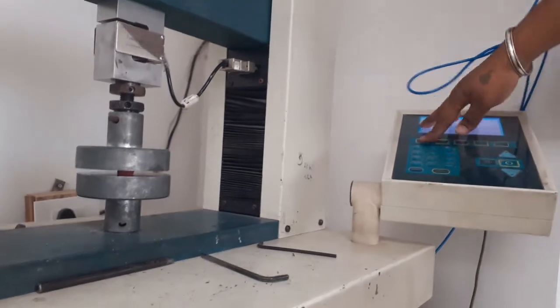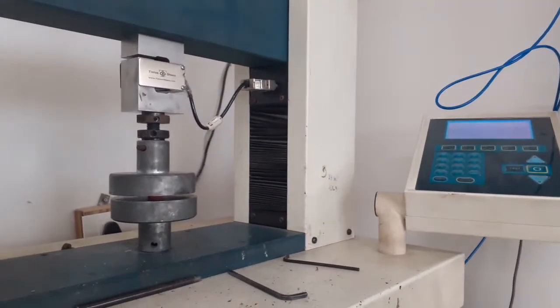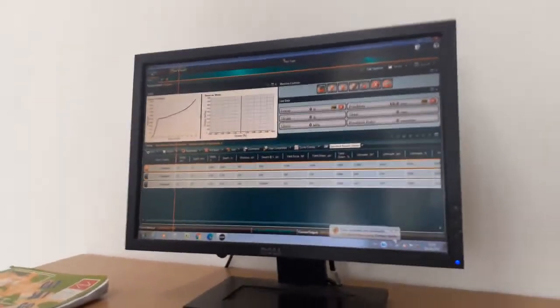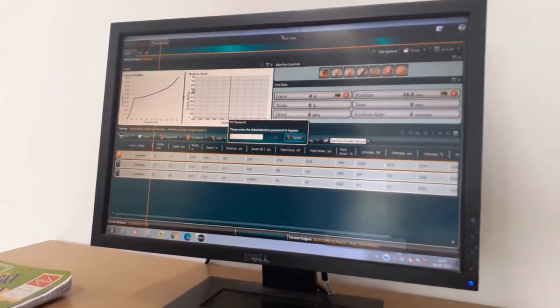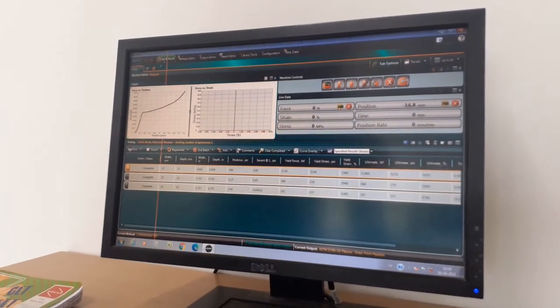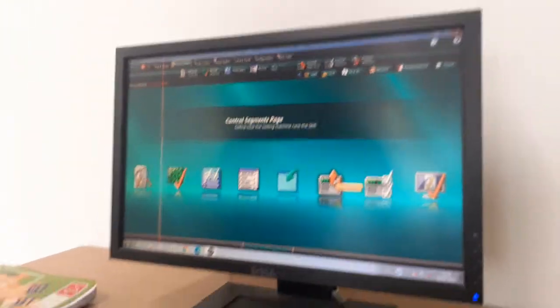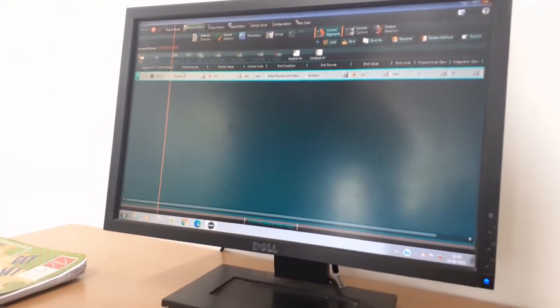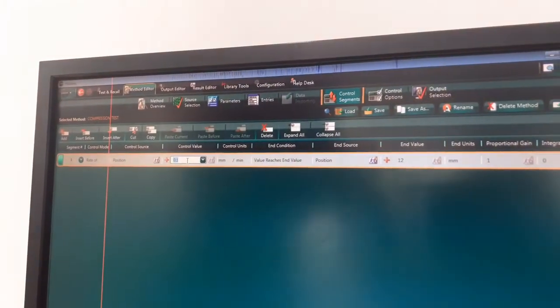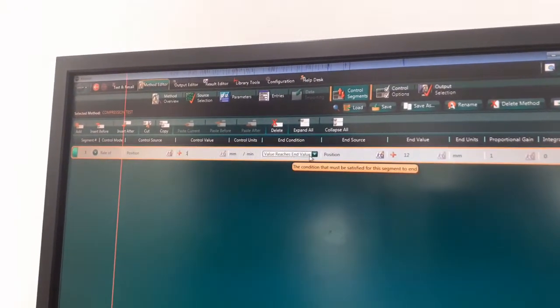Now the sample is sandwiched between those flat clamps and we have to set the position rate. First we go in method writer, then this control segment page. Here is the position, this is the control value. For this sample we use 1 mm per minute and set the end value.